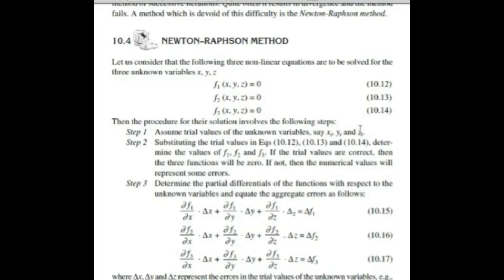Now what should we do? We determine the partial differentials of the functions with respect to the unknown variables and equate the aggregate error accordingly. First, find the partial differential for all variables — that is, ∂f1/∂x, ∂f1/∂y, ∂f1/∂z, and similarly for f2 and f3. Then create the aggregate error equation for each function.